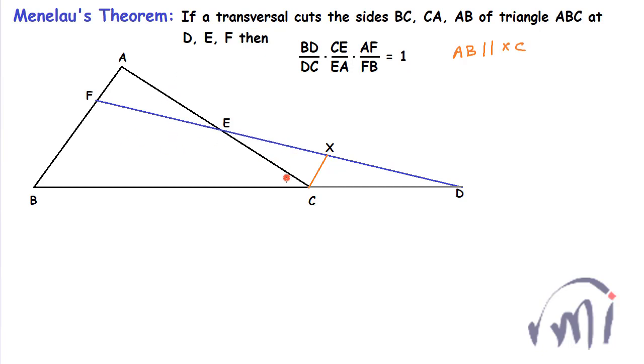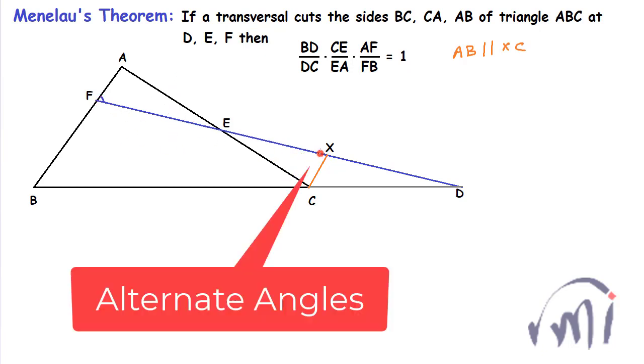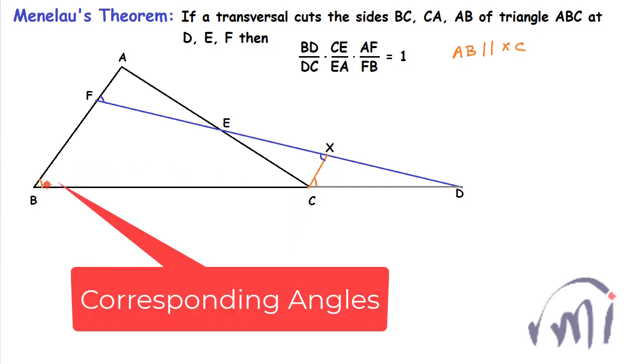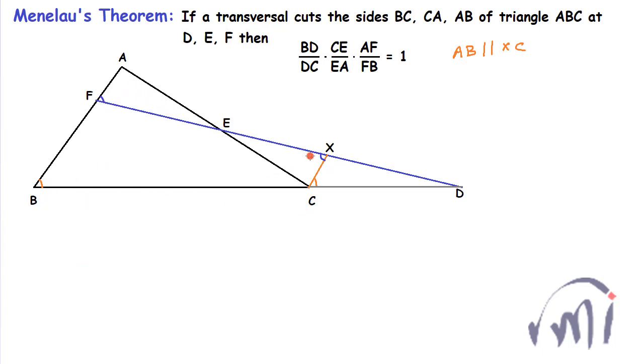Since AB is parallel to XC, that means this angle is equal to this angle, and this angle is equal to this angle. These two are corresponding angles and these two are alternate angles. Similarly, this angle which I am going to mark in green will be equal to this angle. So from here we can see that triangle FBD is similar to triangle XCD.